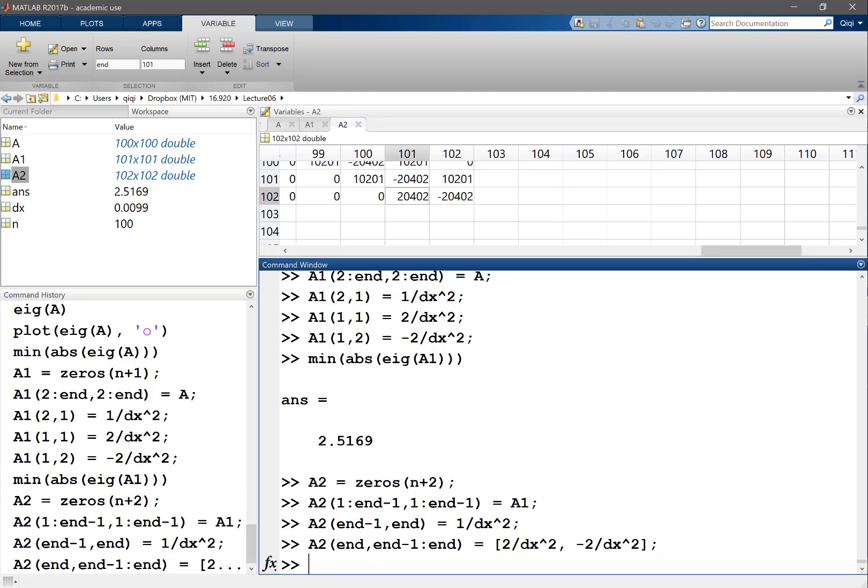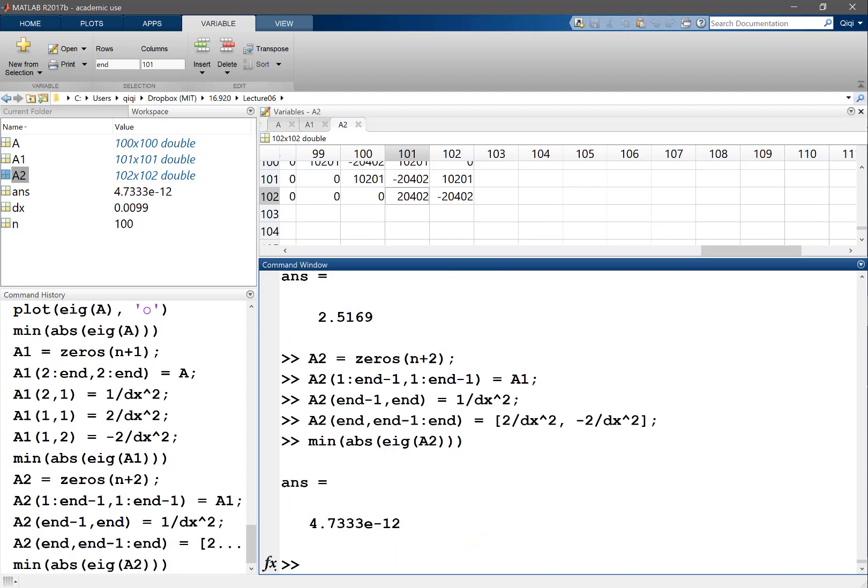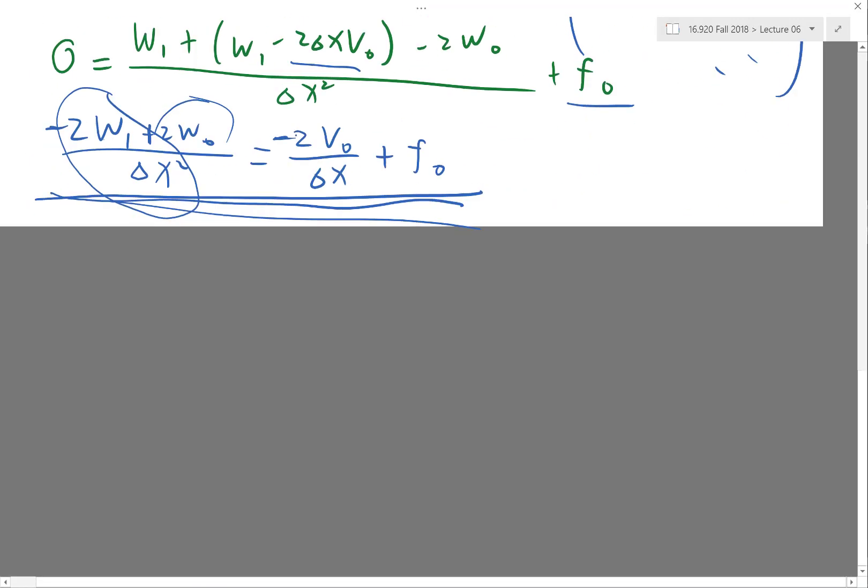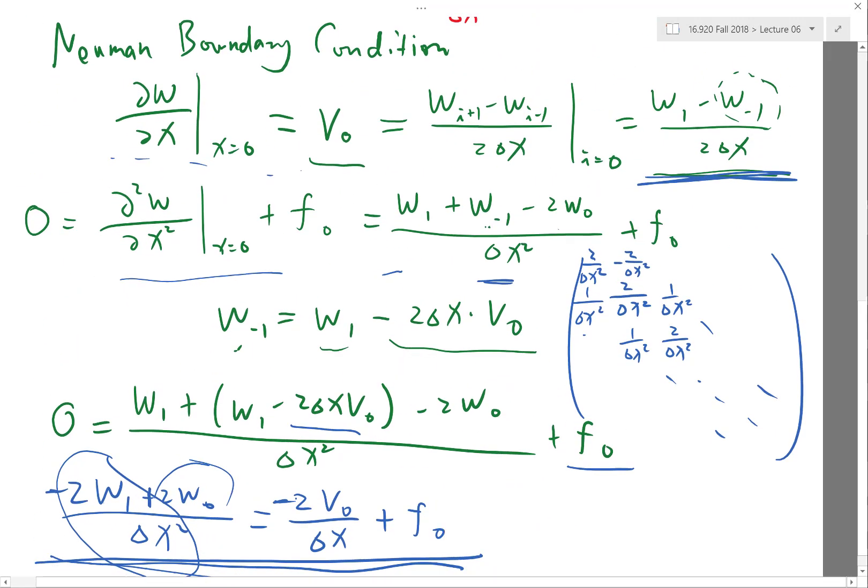So now let's compute this again and we have eigenvalue that is on the order of 10 to the minus 12. What that means is if you have some numerical error, the numerical error is going to be amplified by about 10 to the 11 times. So this is a completely unstable system. And what's the reason for that?